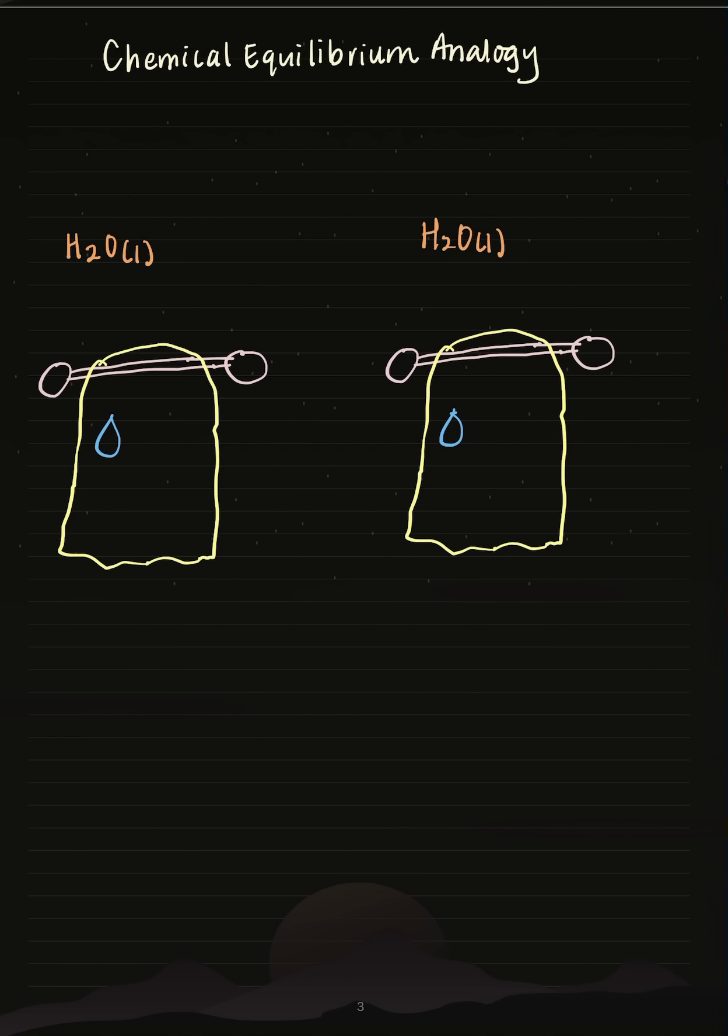Over time we know that the wet towel will dry, and that is because the water that's on the towel will evaporate into gaseous water or water vapor. When all of this water evaporates, that's going to dry the towel. So that's actually not equilibrium, that's an example of a completion reaction.